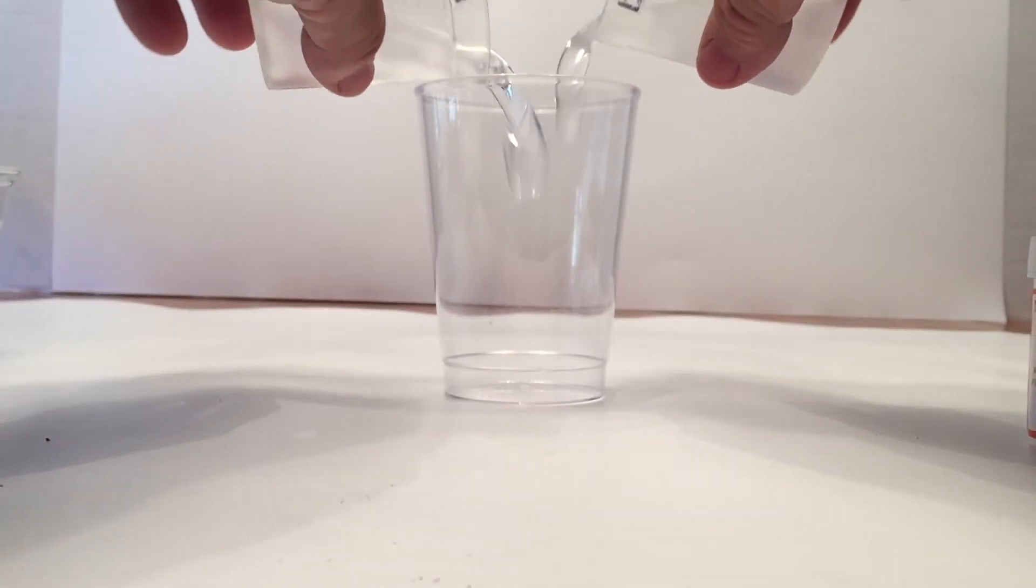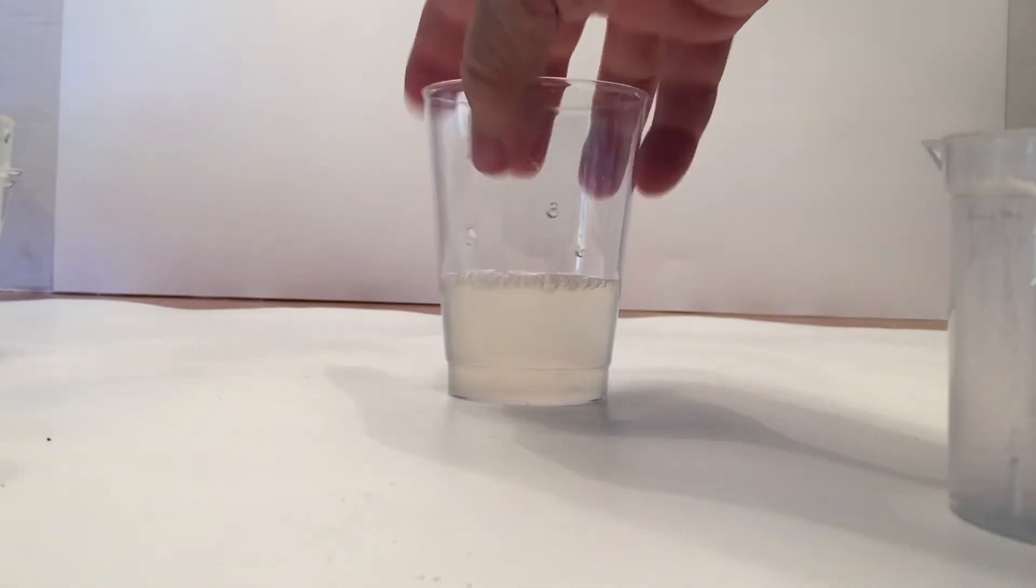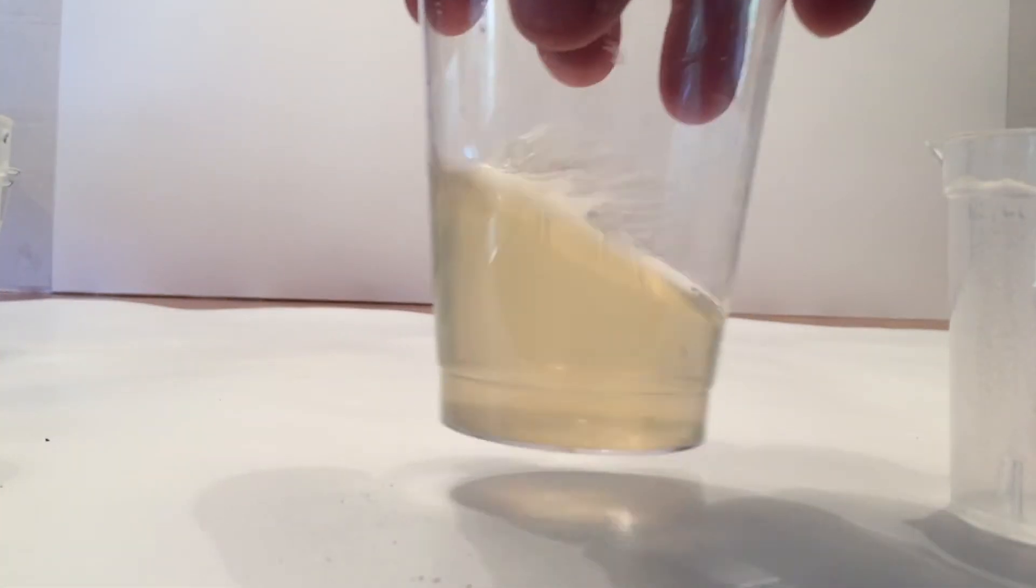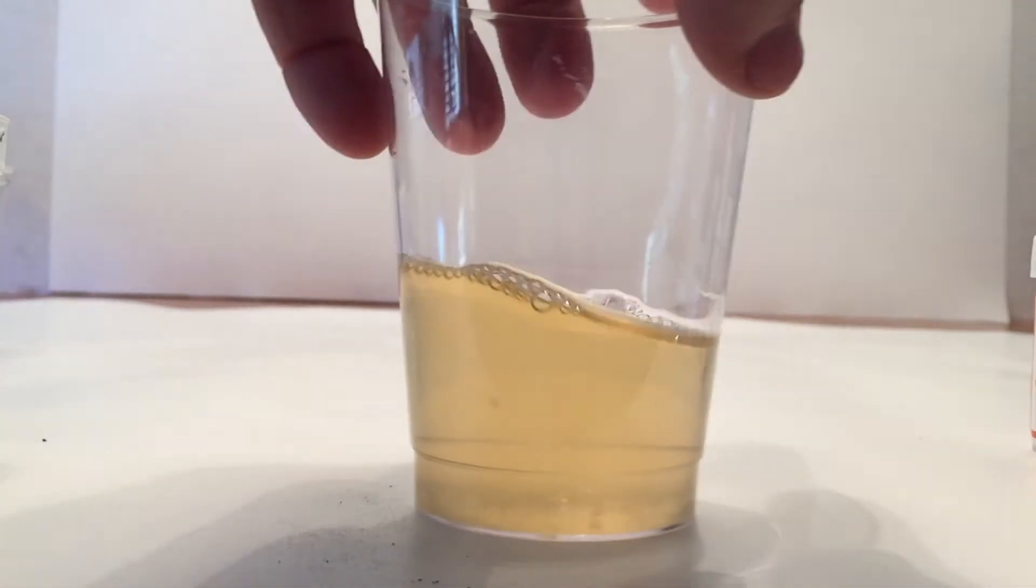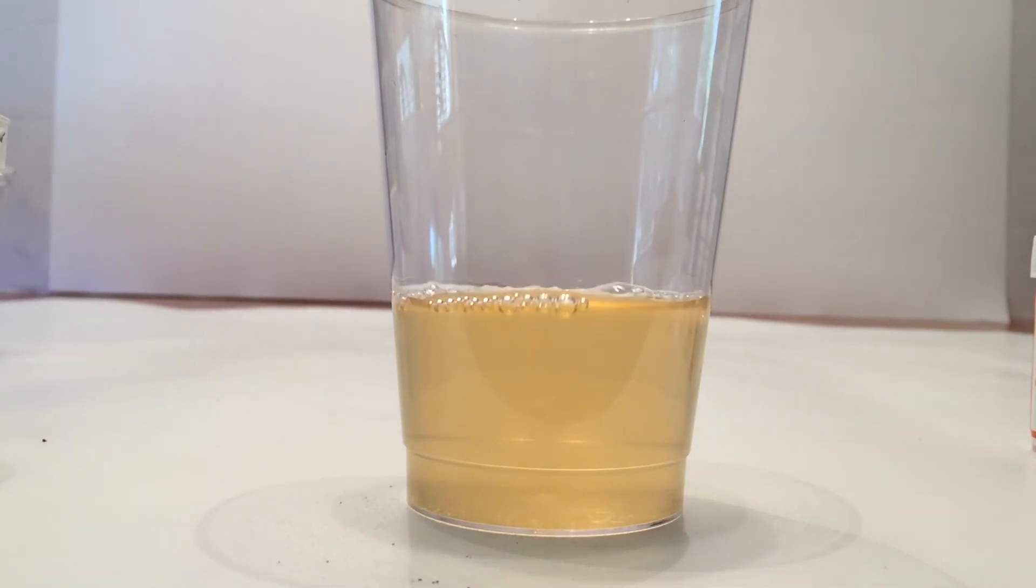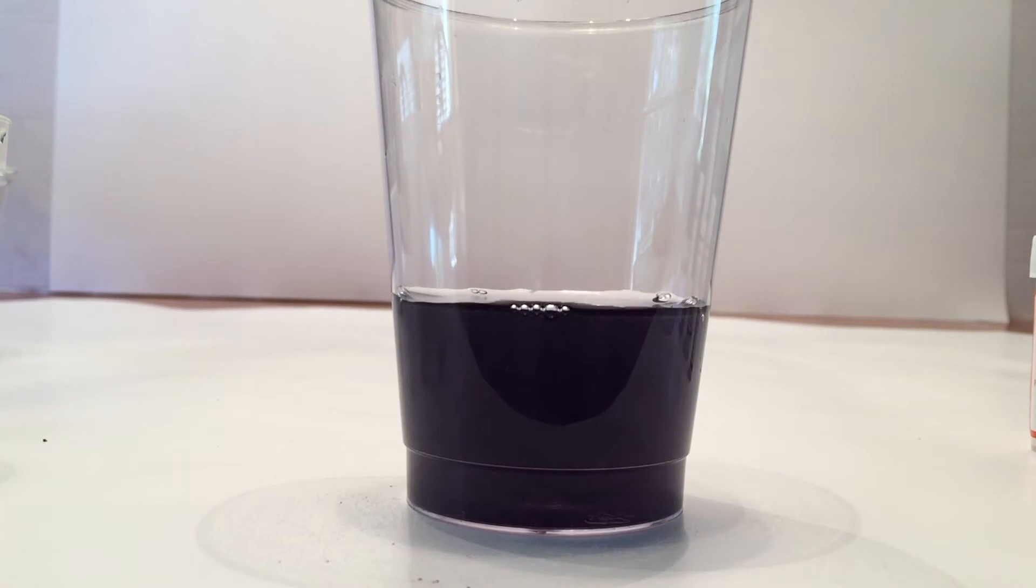So we take cup A and B at the same time and pour it into a third cup. And then it's going to do the reaction. So we'll go ahead and watch it. And we see what color it is. We all look like it's orange. Oh, it's purple.